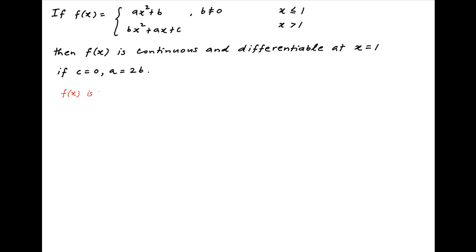The given function f(x) is continuous at x equal to 1 if the limit of f(x) as x tends to 1 from the negative side is equal to the limit of f(x) as x tends to 1 from the positive side, which is equal to the value of the function at x equal to 1.